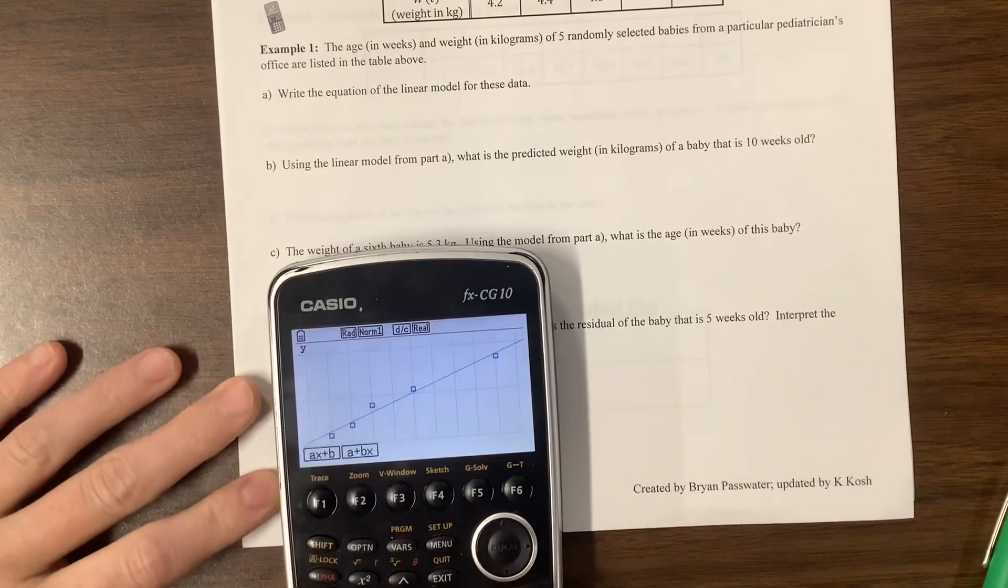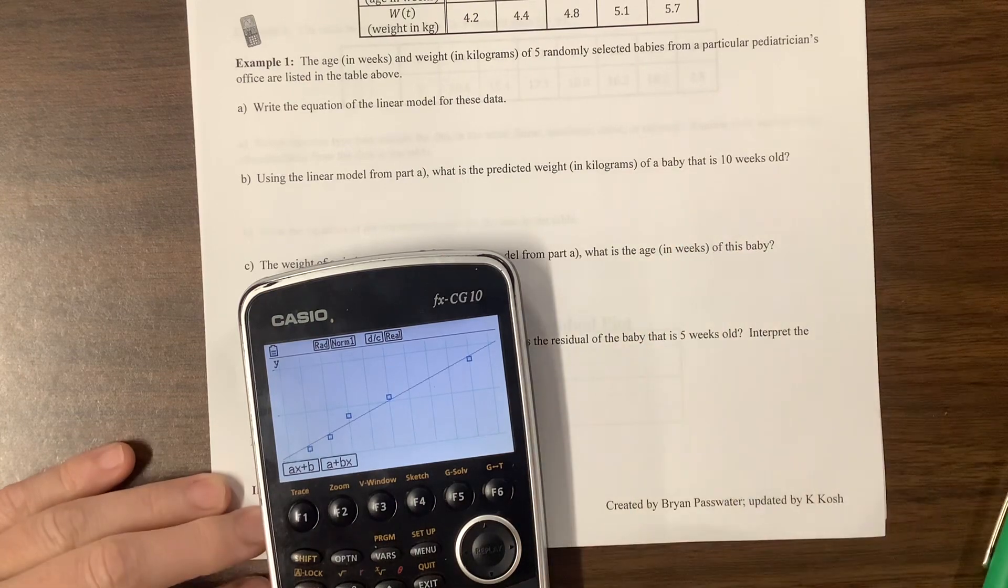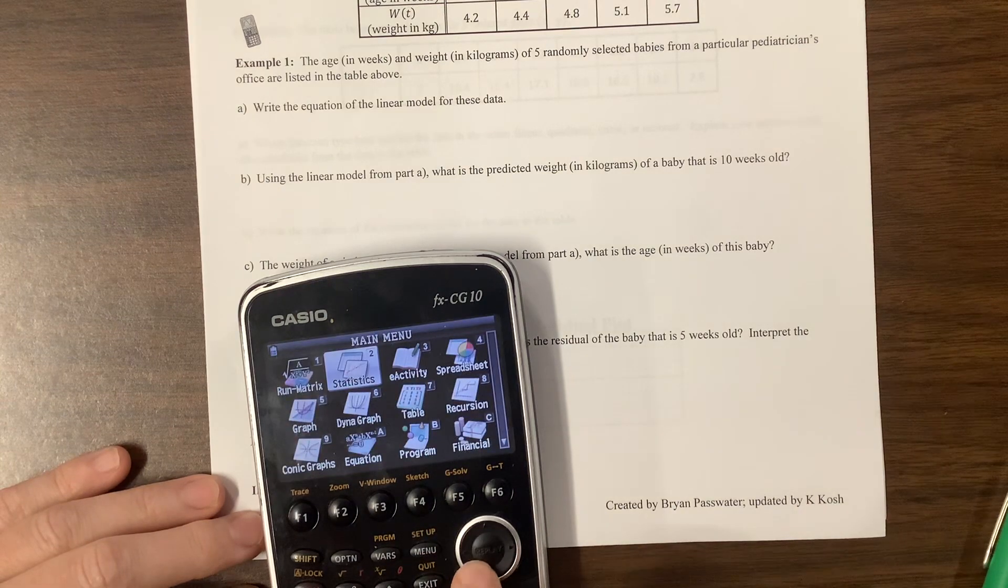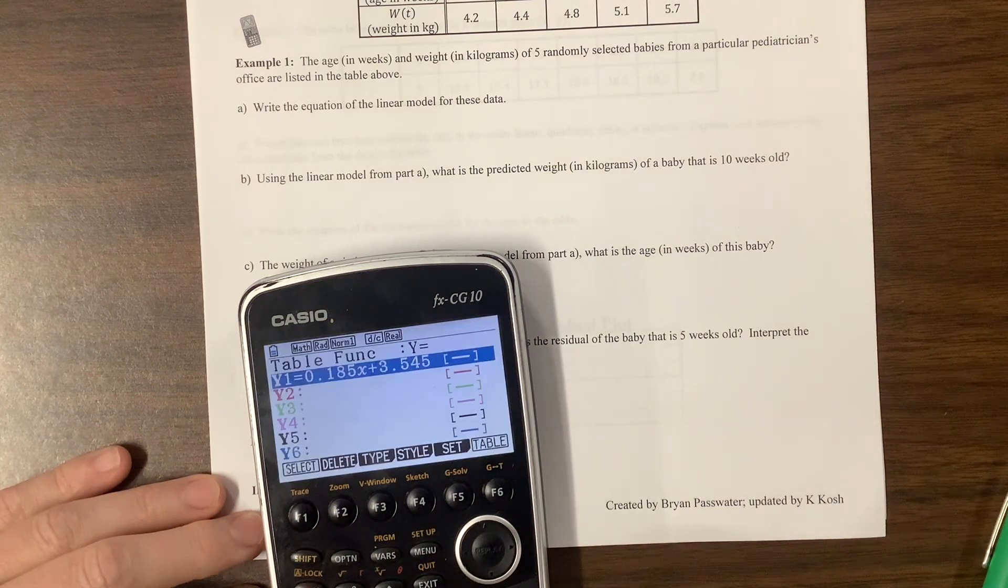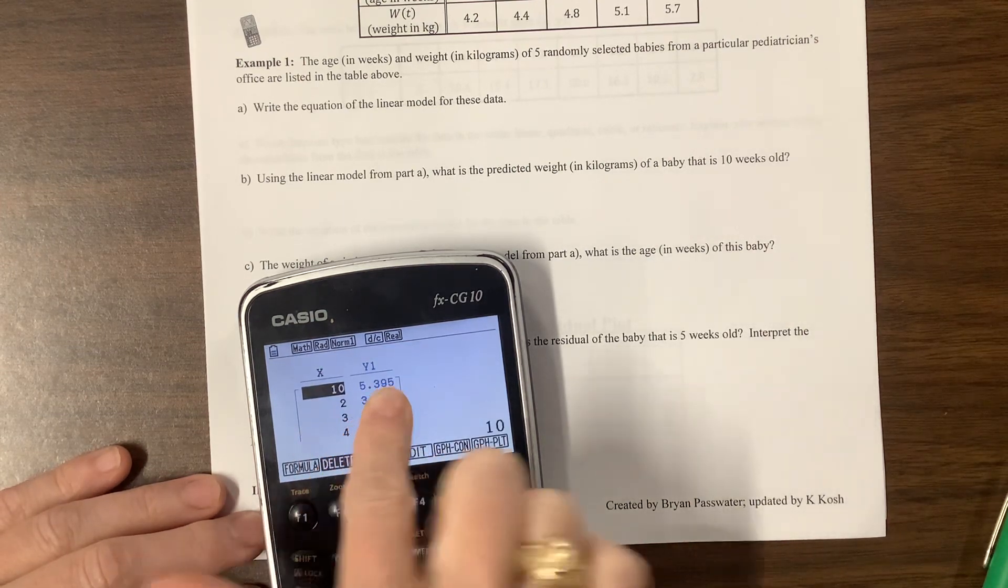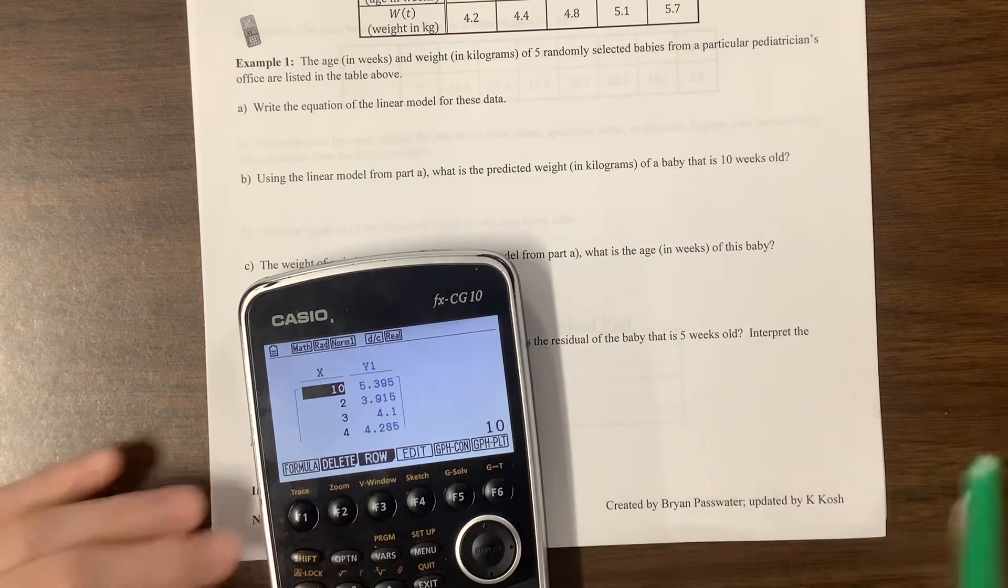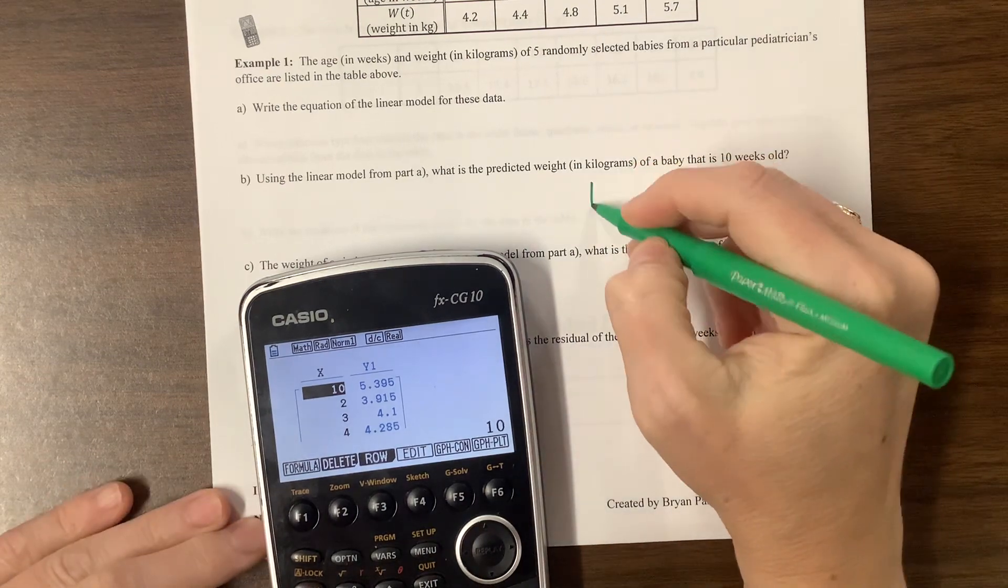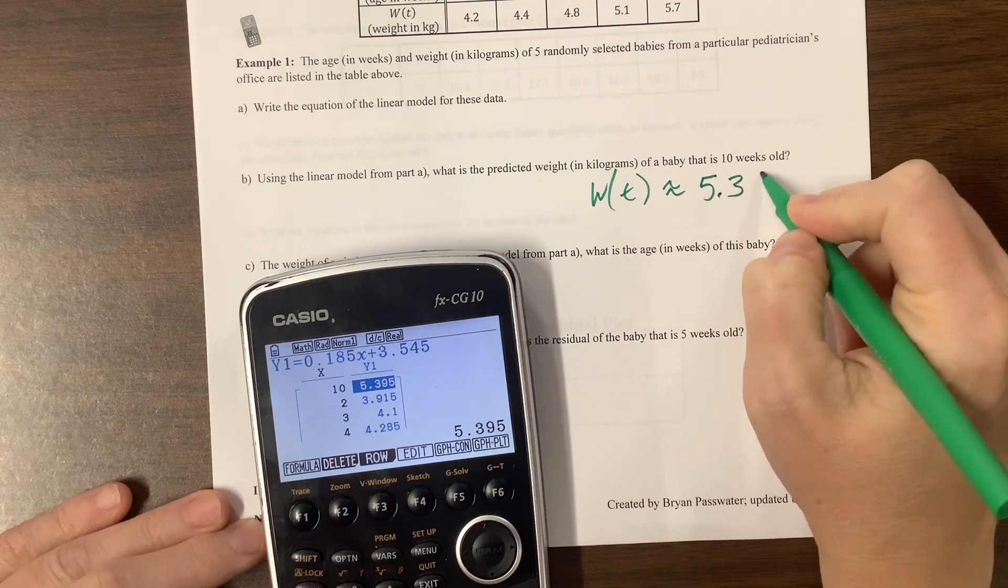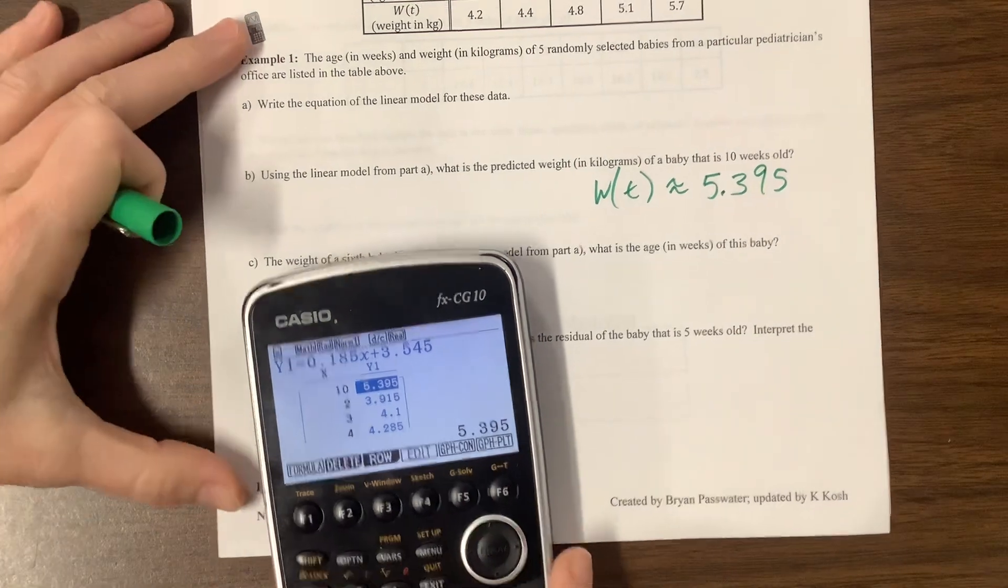Then it says, using the linear model, what is the predicted weight for a baby that is 10 weeks old? I may write some stuff down, but I don't think I need to write this down for you yet. So I can come back here. I can go to my table and here's that equation. I turn it on, hit select, go to graph that. I wanted to know at 10 weeks, not times 10. And so the predicted value is the baby would be about, well, maybe exactly 5.395 kilograms. I don't know if that's a big baby or not because I don't think in terms of kilograms, but my bad.